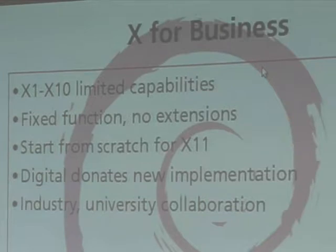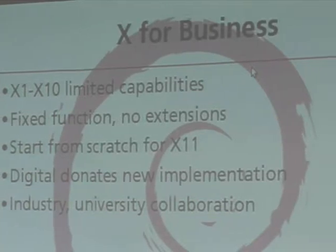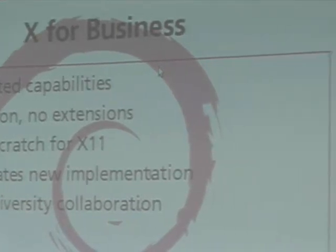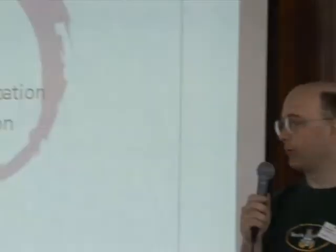Through versions X1 through X10, it was a typical university project. There wasn't any particular formal schedule or requirements for compatibility. Every time the protocol changed in an incompatible way, we got a new version number. X9 was never actually instantiated. Each version of the windowing system was fixed — not extensible in any way. So every time they wanted to add a new feature like color, they had to change the protocol number.